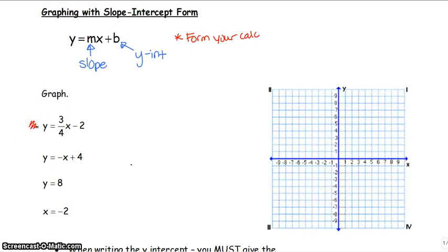We've got y equals 3 fourths x minus 2. So we're going to start with our y-intercept at negative 2, and our slope is 3 over 4, so we're going to rise 1, 2, 3, run 1, 2, 3, 4 to the right. Since it's positive we go up and positive we go right.